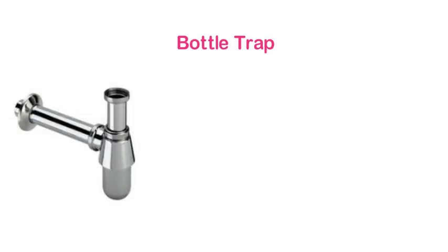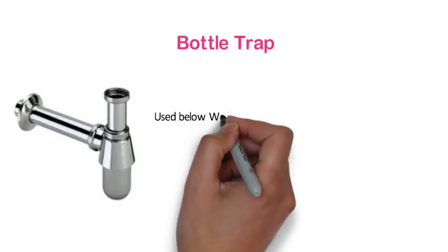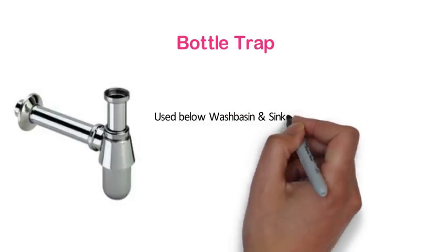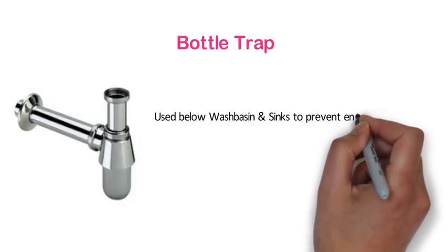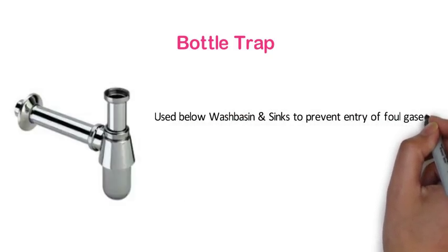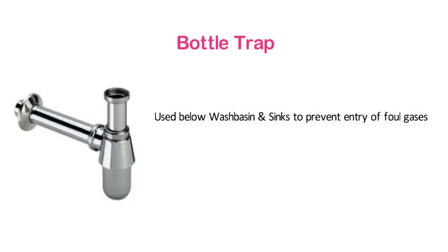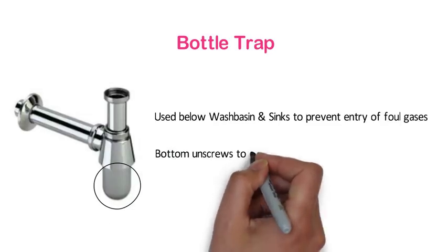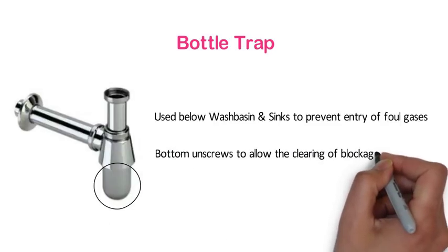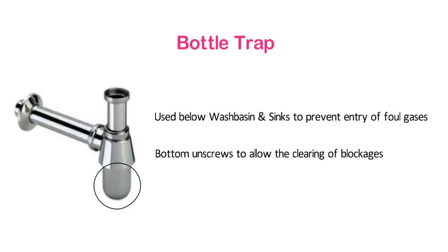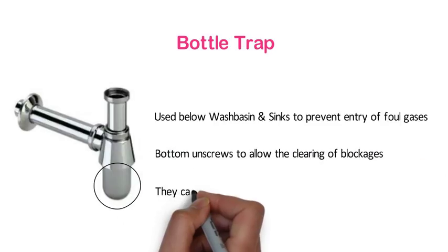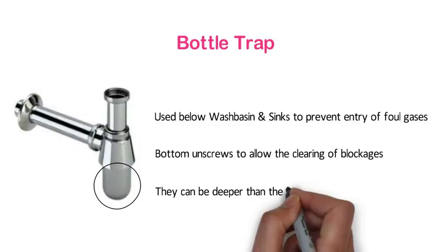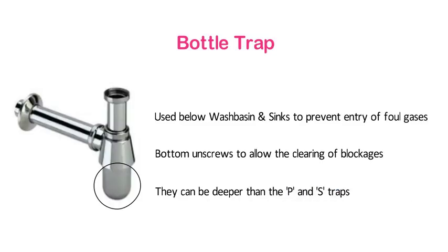Bottle trap. This trap is used below wash basins and sinks to prevent entry of foul gases. Normally the bottom unscrews to allow the clearing of blockages. They can be deeper than P traps and S traps.